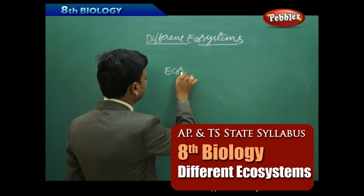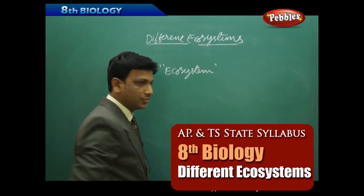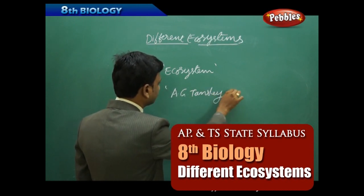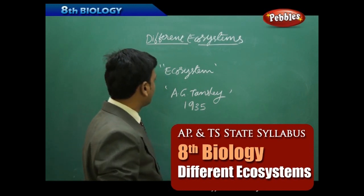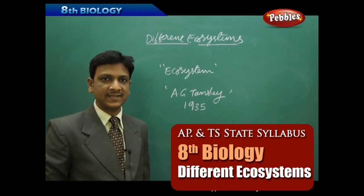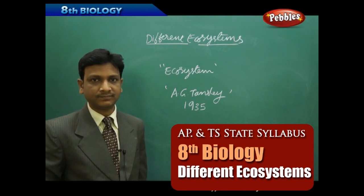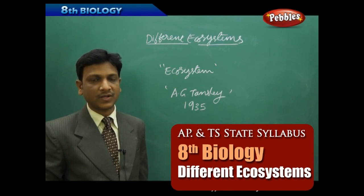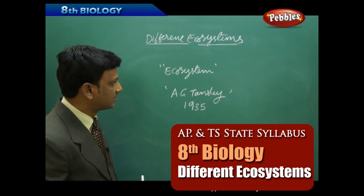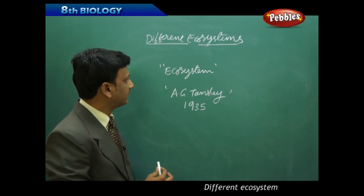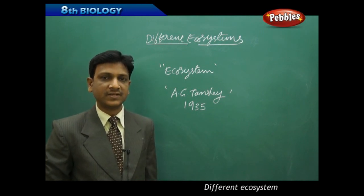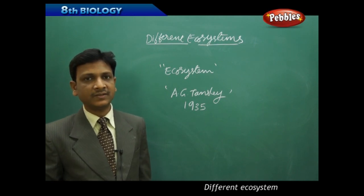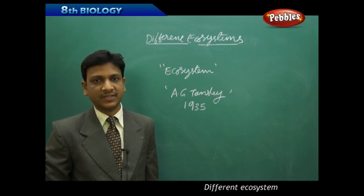The word ecosystem was first used by a British botanist and ecologist A.G. Tansley in the year 1935. According to Tansley, nature works in a system which is profoundly influenced by the non-biotic or environmental factors. He named that functional unit as ecosystem, in which there is interaction among different living organisms and their relations with non-living components like air, water, temperature, and other factors.